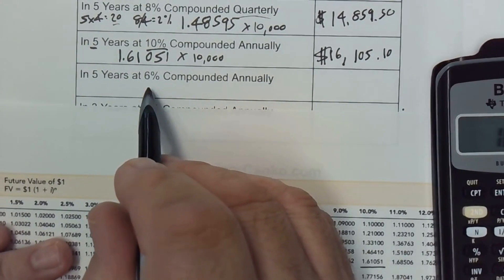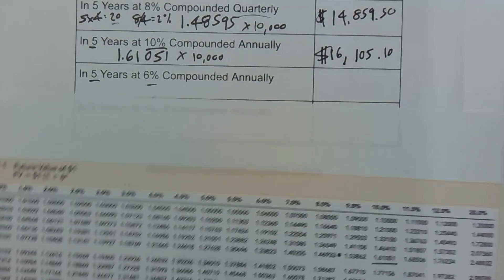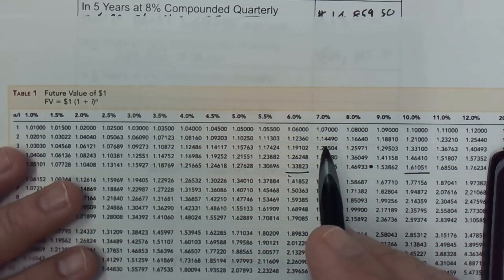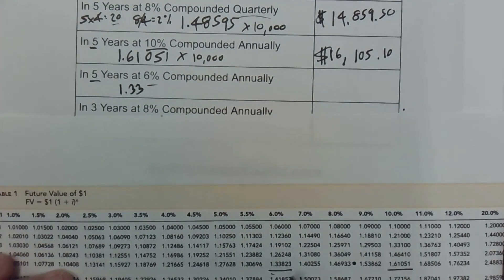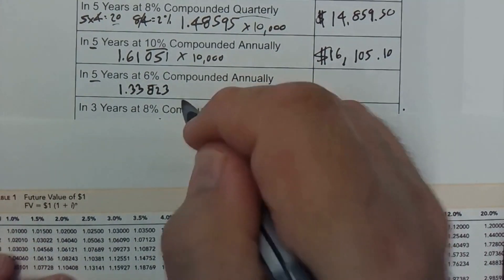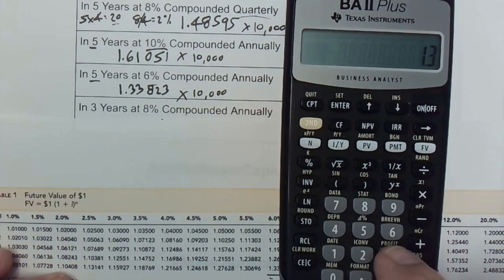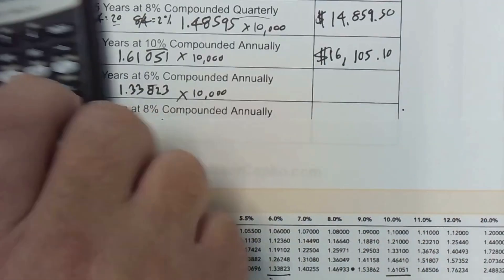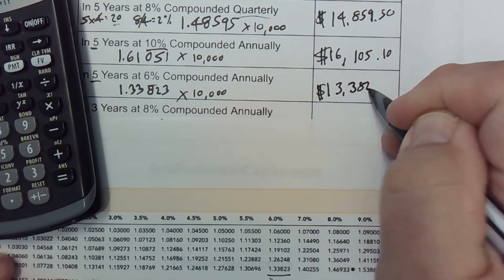Now let's see if we reduce the interest rate, we should expect it to go down. We have five years at 6%. So we're going to find five years and come across to 6%, and that's right here, 1.33823. I'm going to multiply that by our 10,000 principal amount. 1.33823 times 10,000 equals $13,382.30. So you see it's dropped, and that is to be expected because we have a lower interest rate.